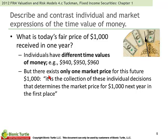Chapter 1 is introductory. It introduces the time value of money and asks the question: what is today's fair price of $1,000 received in one year? Tuckman makes two points. The first is that, as individuals, you and I can assign different values to that — today I can decide that $1,000 in a year is worth $940 to me, and you can decide something different. However, the second and more important point for our purposes is that there ought to exist only one market price for this future $1,000. It is the collection of these individual decisions that determines the market price for $1,000 next year in the first place.